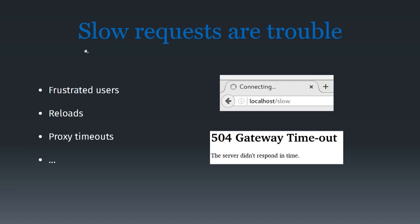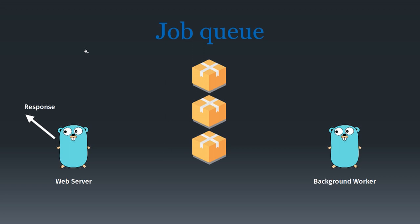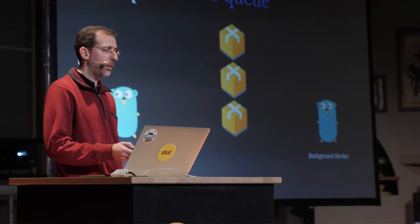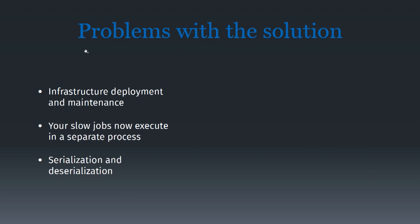There's a standard solution for this: the job queue. The web server receives a slow request, creates a work package, sticks it into the job queue, and responds immediately. Meanwhile, a background worker does the real job. But this is yet another piece of infrastructure you need to maintain and deploy. And your slow job is now going to execute in a separate process, so you incur the cost of serialization and deserialization.